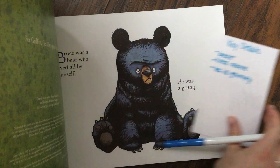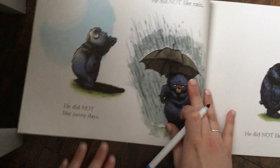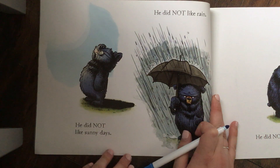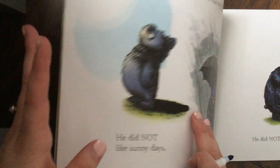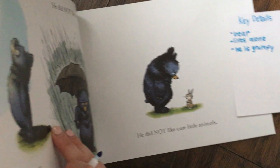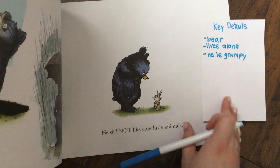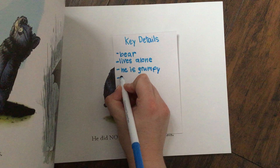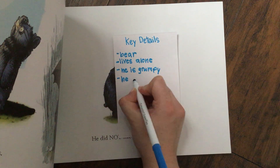Okay, let's turn the page and find out what happens next — see if we can find any more key details. He did not like the rain. He did not like sunny days. He did not like cute animals. So we can also say he doesn't like a lot of things.